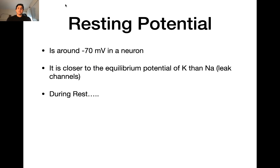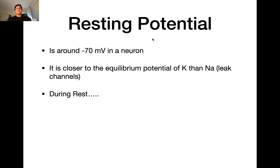Let's start off at the resting potential. The resting potential is the potential at which the cell is at rest — an easy definition. The resting potential of a neuron is going to be around negative 70 millivolts. This value is really close to the equilibrium potential of potassium, which is around negative 90 millivolts, while the equilibrium potential of sodium is around plus 60 millivolts. So the resting potential is much closer to potassium than sodium, because at rest we have many more potassium channels open than sodium channels, so the resting potential reflects potassium's equilibrium potential more than sodium's.